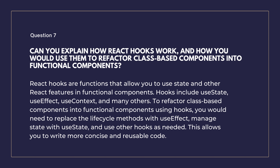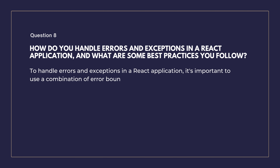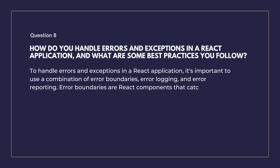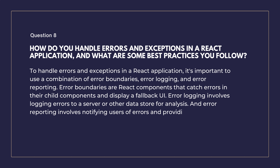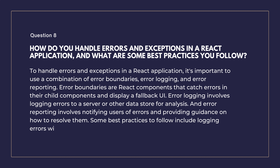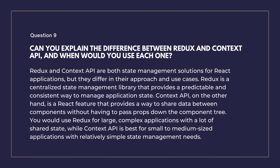How do you handle errors and exceptions in a React application? To handle errors in a React application, it's important to use a combination of error boundaries, error logging, and error reporting. Error boundaries are React components that catch errors in their child components and display a fallback UI. Error logging involves logging errors to a server for analysis, and error reporting involves notifying users and providing guidance on resolution. Best practices include logging errors with as much detail as possible, handling errors gracefully, and providing clear error messages.